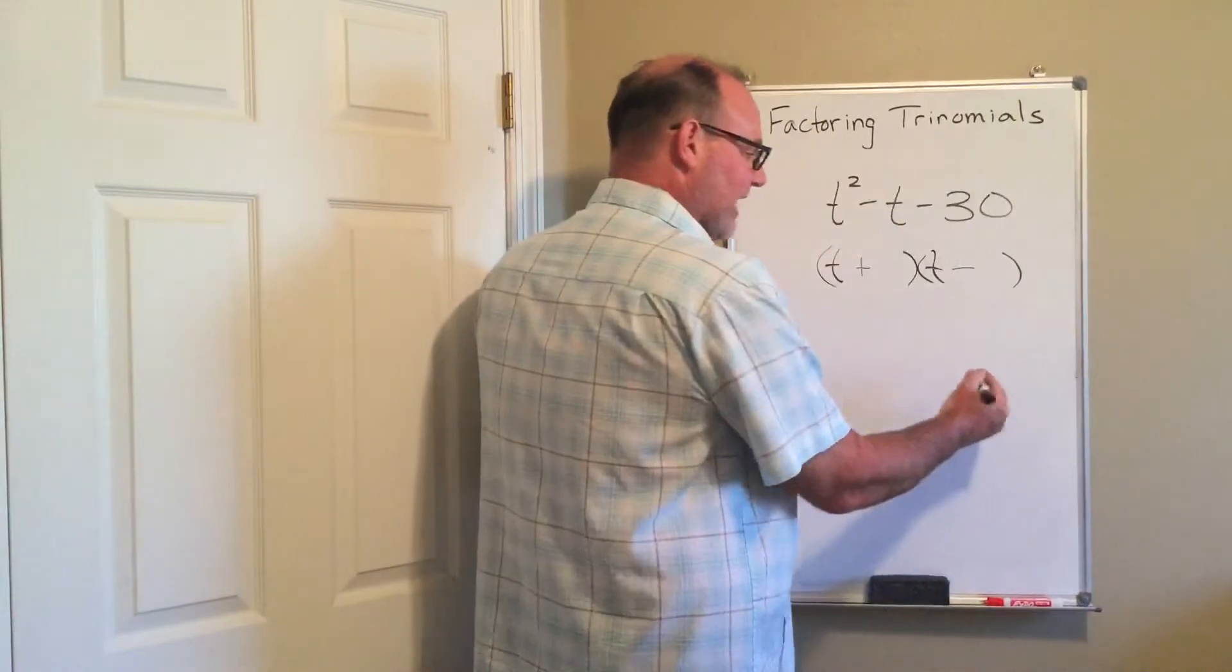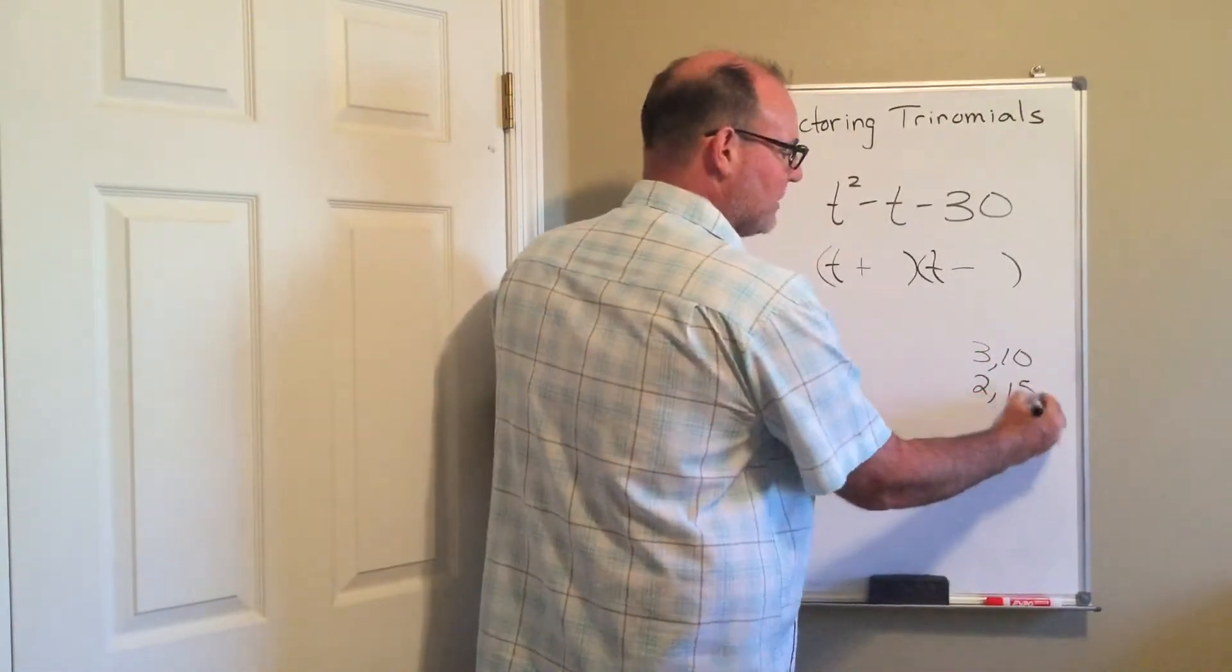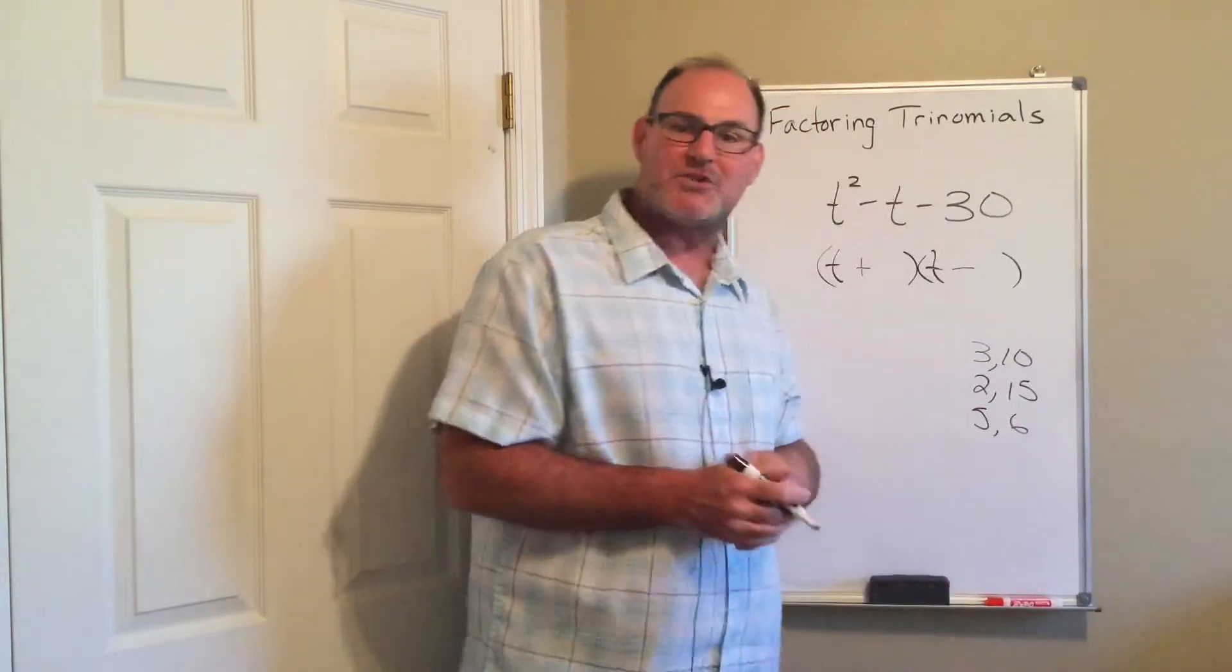So when you do your factor list of factors of 30: 3 and 10, well, those are 7 apart. 2 and 15, those are 11 apart. And 5 and 6. Oh, there it is. Those are 1 apart.